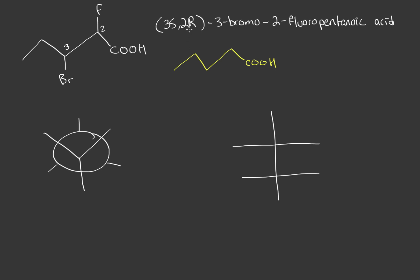This tells us that the fluorine has R stereochemistry, so it must be spinning this way when we talk about the prioritization on this carbon. Fluorine is number one because it has the highest atomic number. When comparing the two neighboring carbons, the one with bromine is number two and the other is number three. So it's spinning this way.